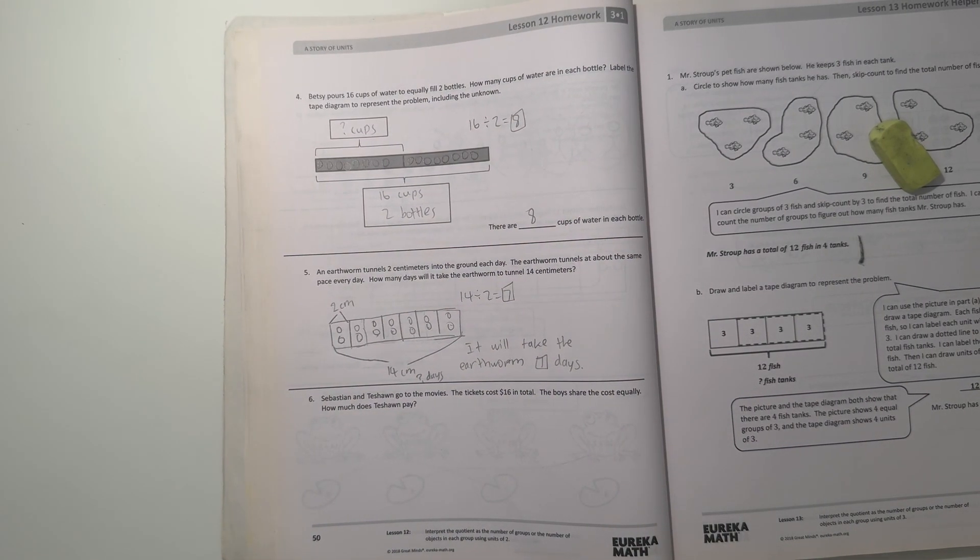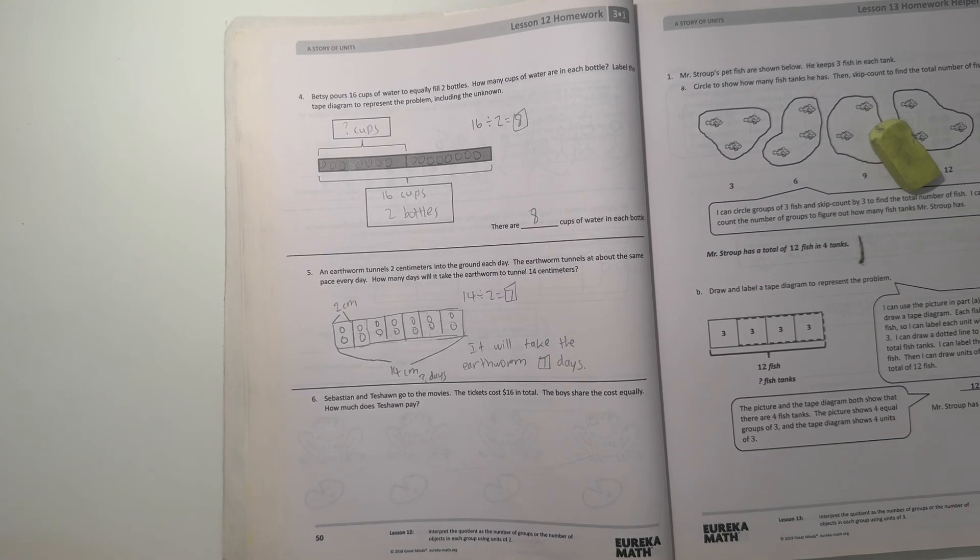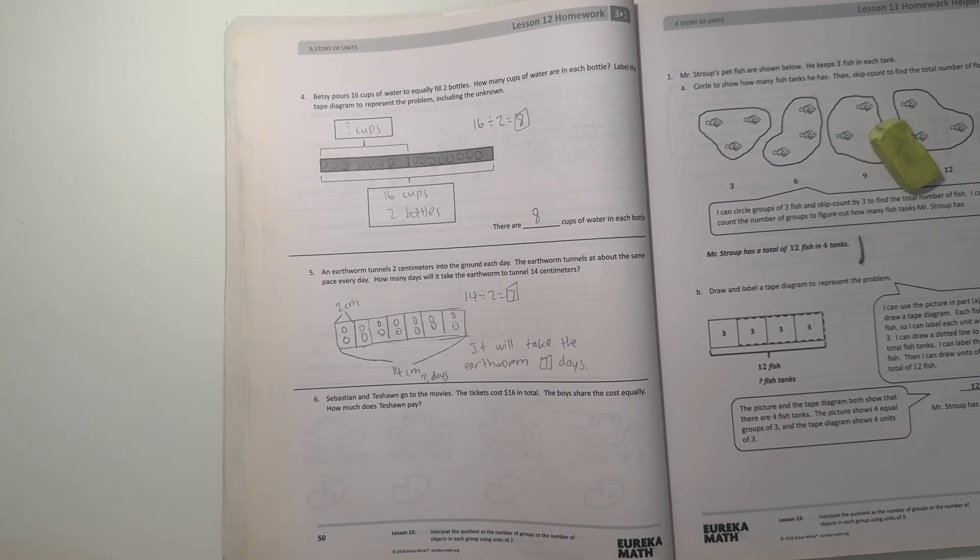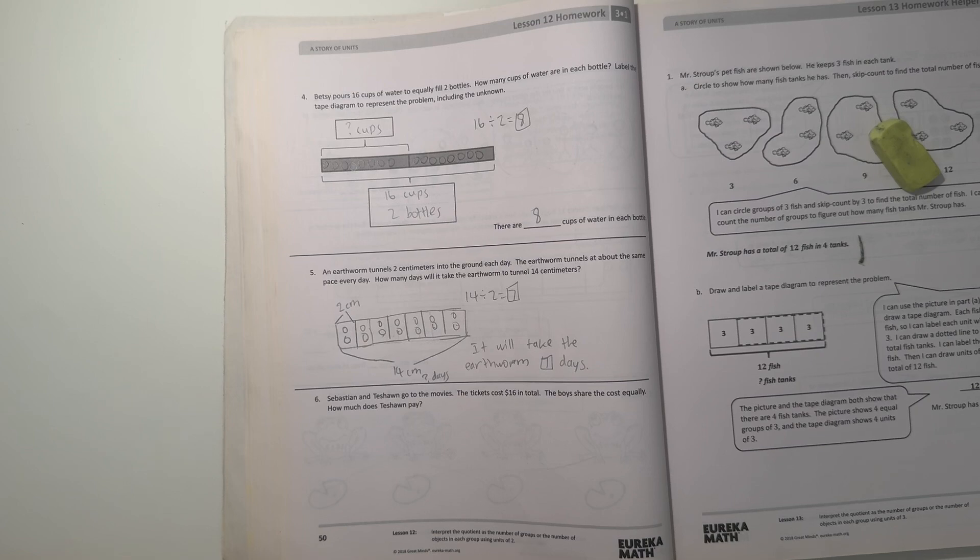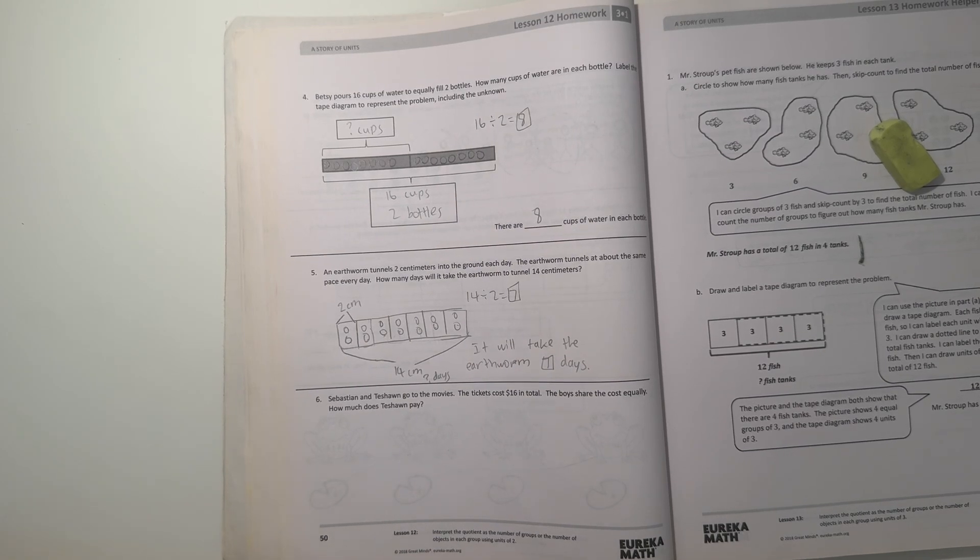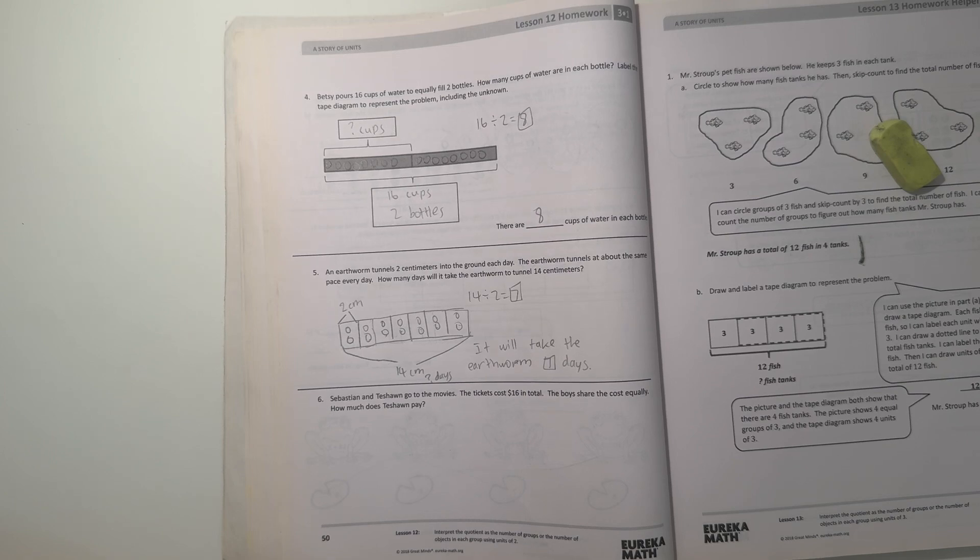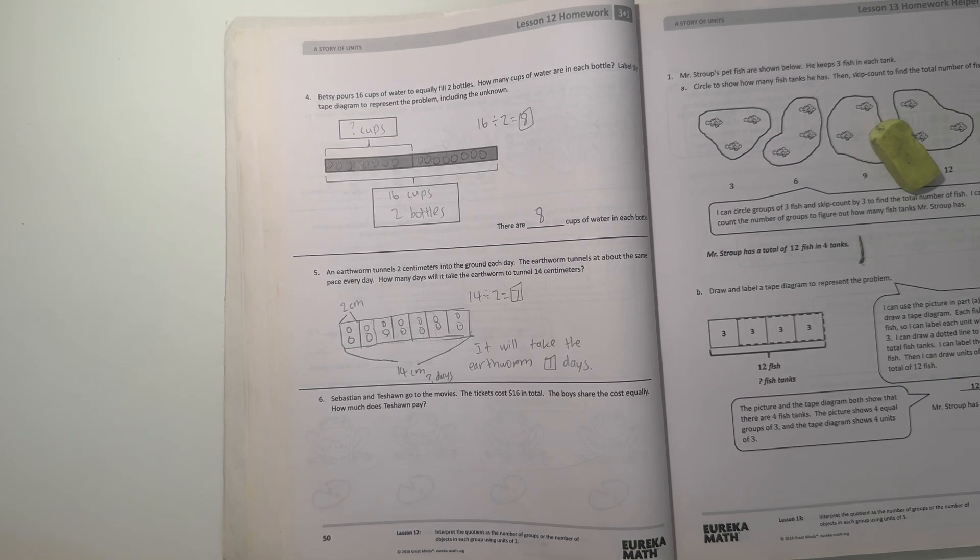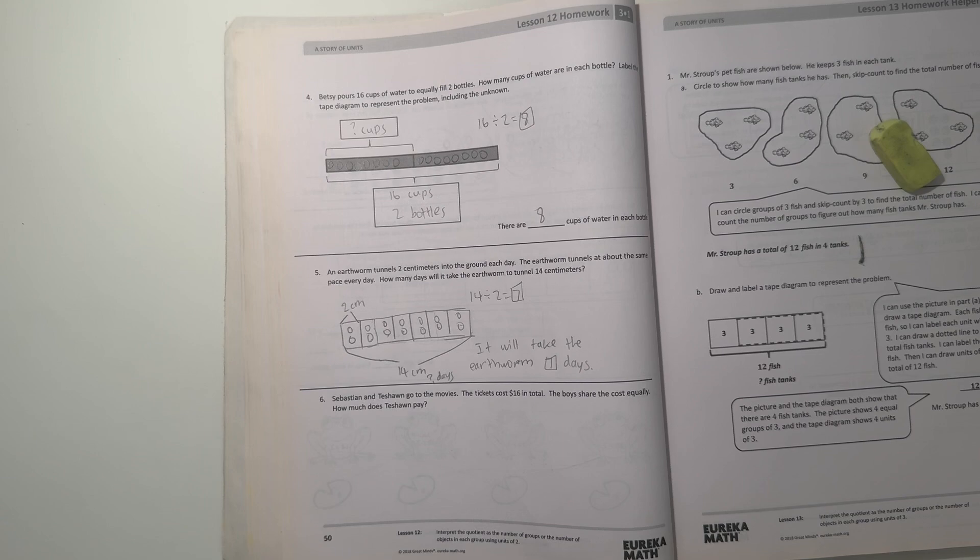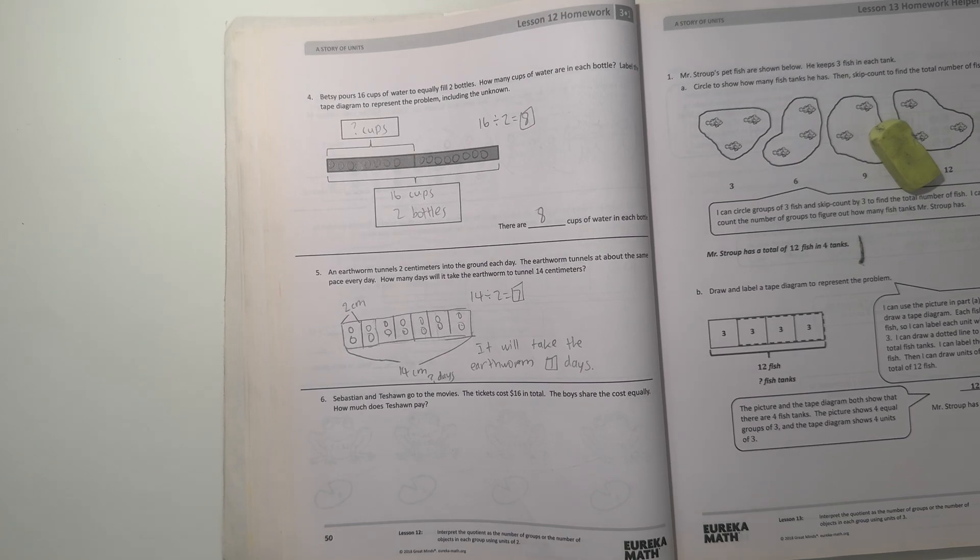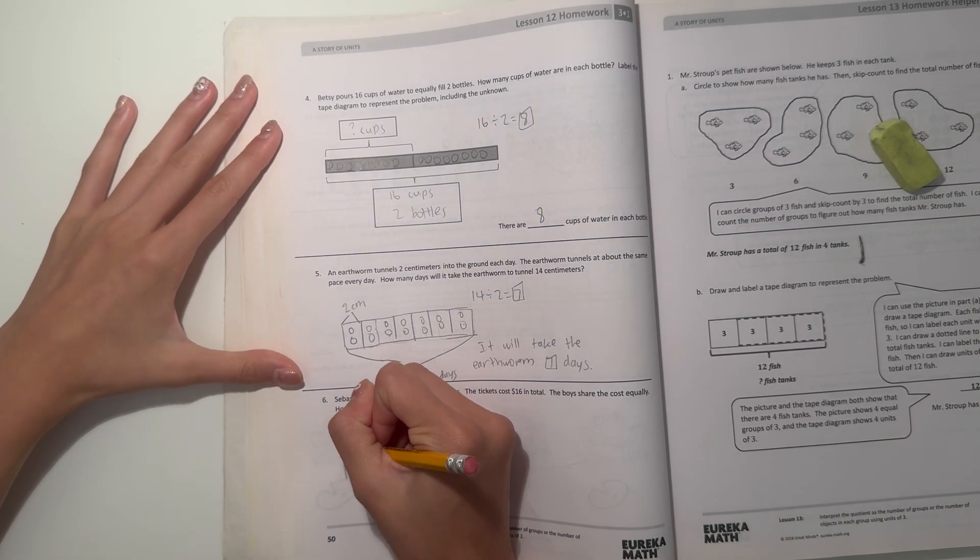Number 6 says Sebastian and Tashaun go to the movies. The tickets cost $16 in total. The boys share the cost equally. How much does Tashaun pay? Alright, so let's see. What do we know? Let's start by drawing a tape diagram.